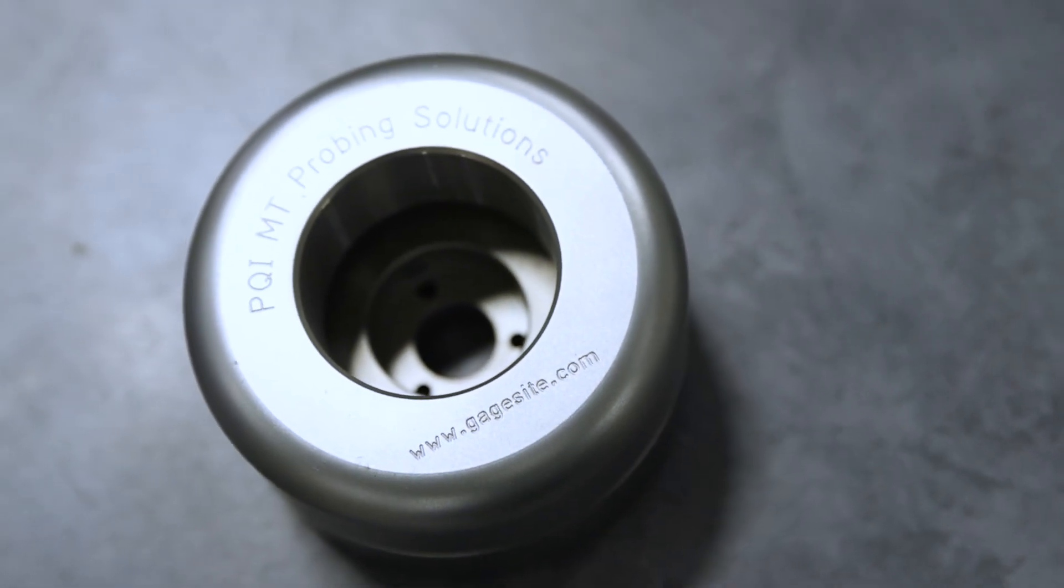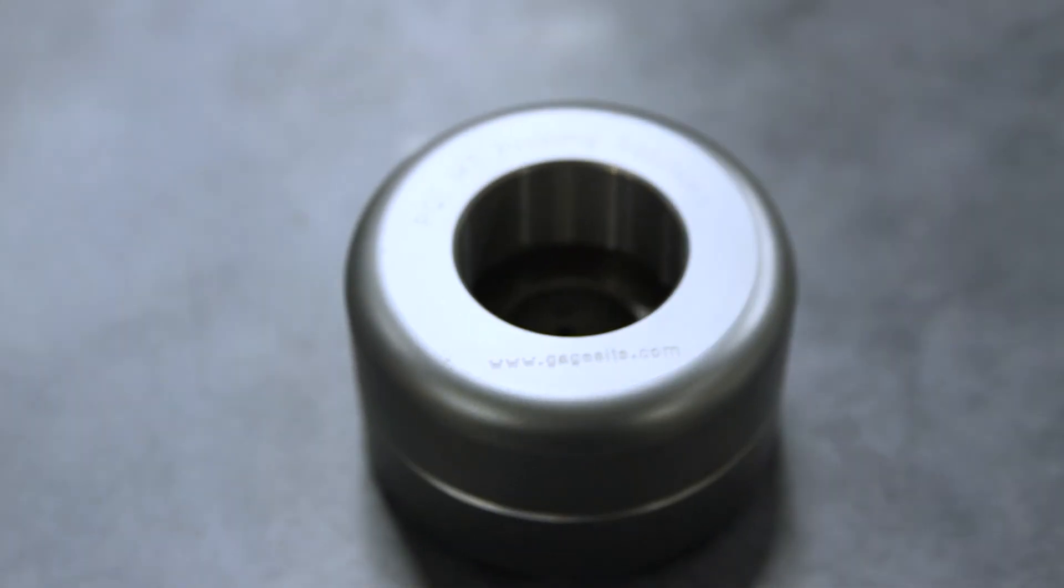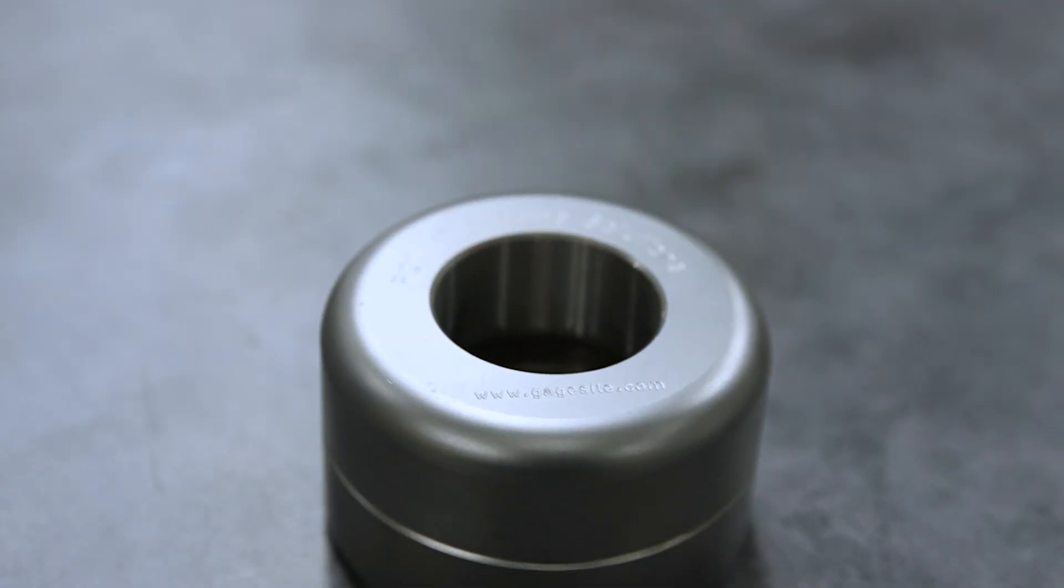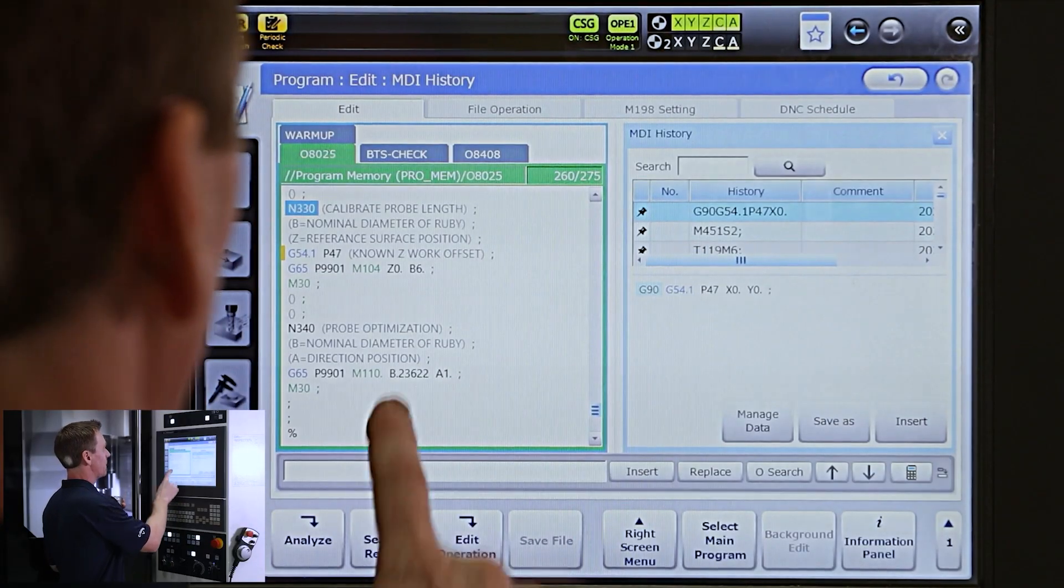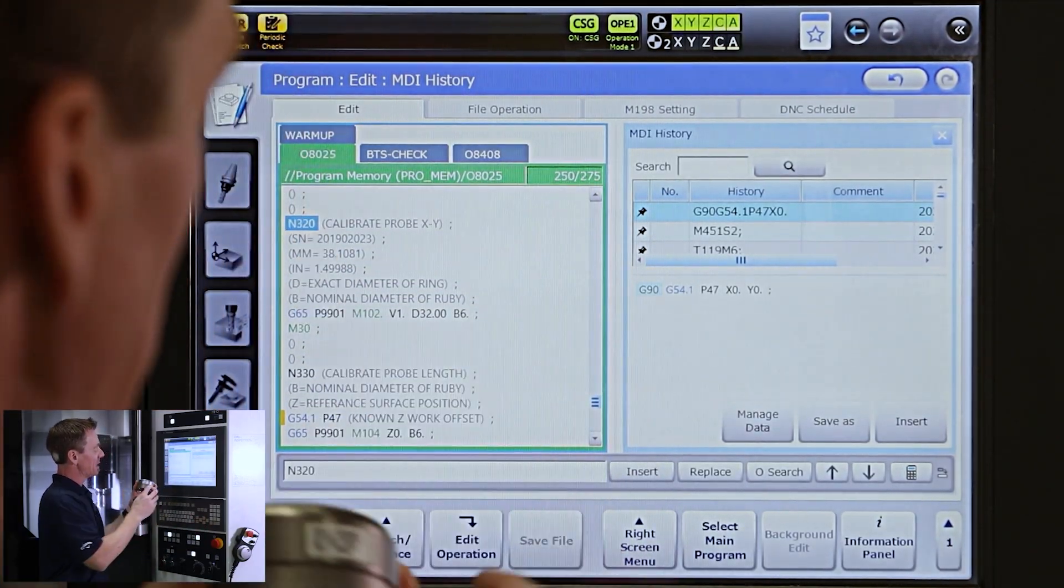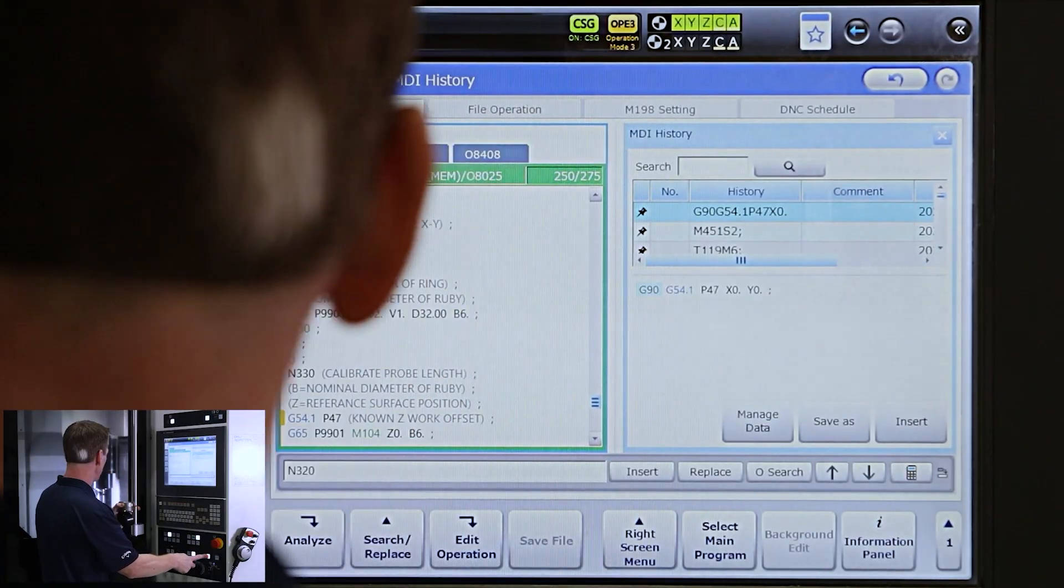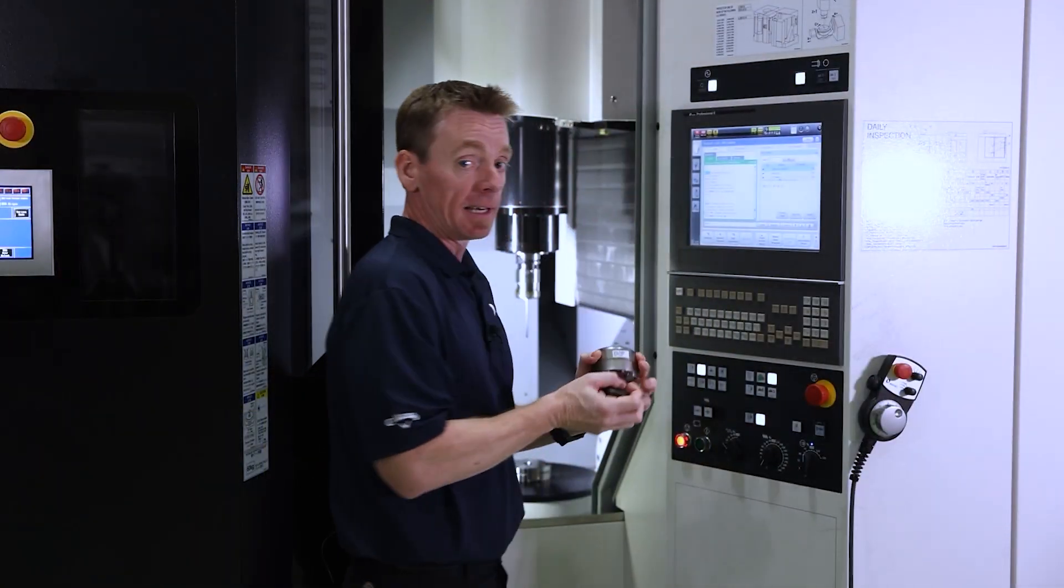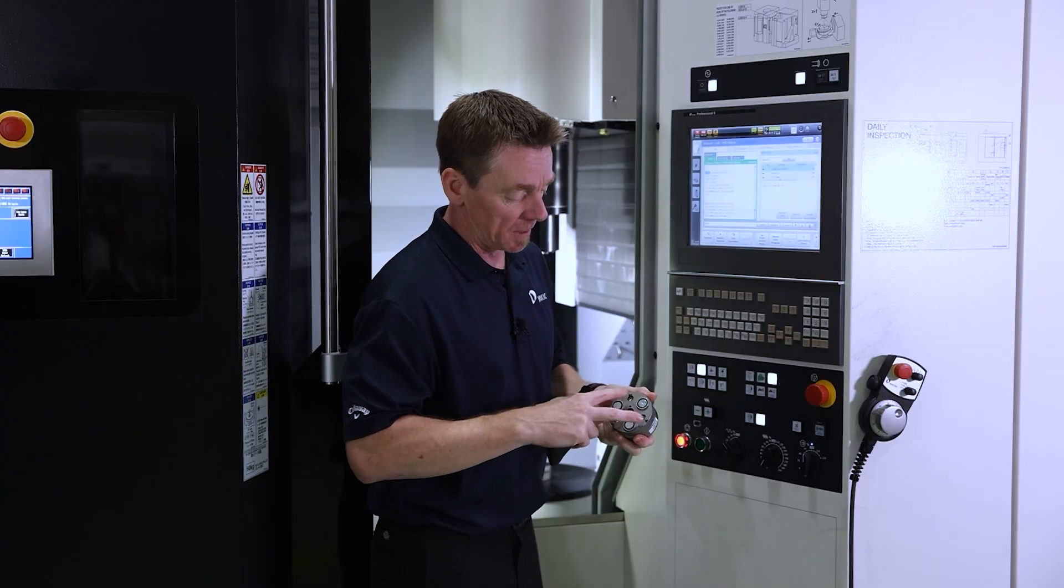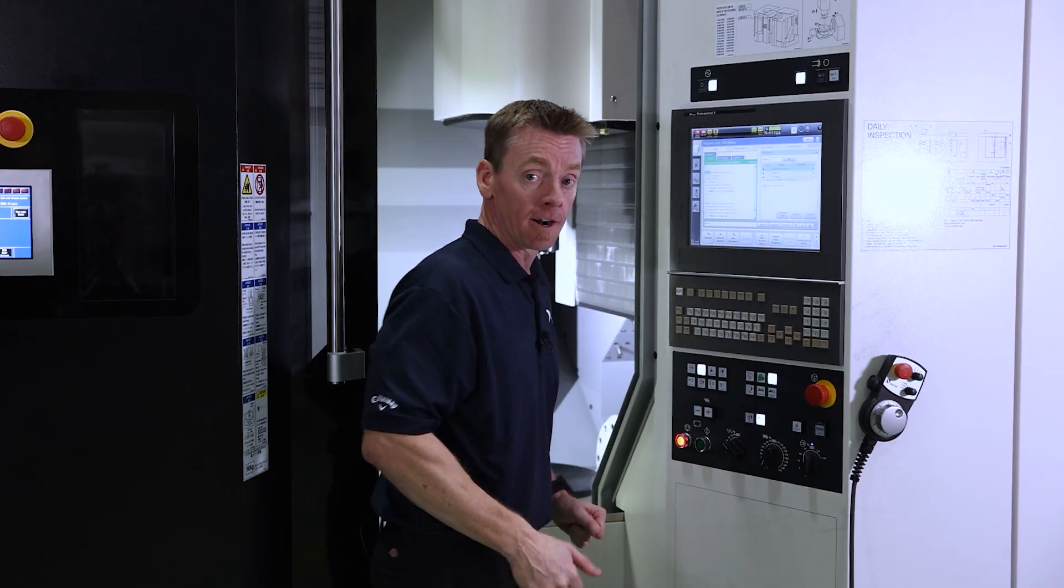So the biggest thing here is we're going to use our calibration ring that comes with the machine. It is serialized. It has all the dimensions on the side. So when we go to our 8025 program for N320, we want to make sure this information matches the sticker. We're good here. So what we're going to do is we have an empty pallet in here. We can mount this to it. It has three points of contact with magnets. It's going to suck itself on there.